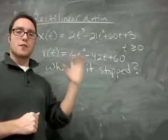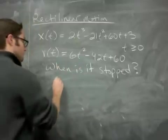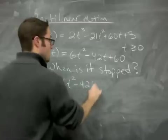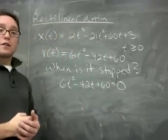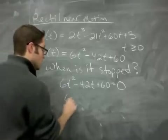The next question they can ask me is when is it stopped? So what does that really mean in terms of position, acceleration, velocity? It means when is the velocity 0? So here's the velocity function. I left it on the board. When does that equal 0? So you solve it. So I factored this.